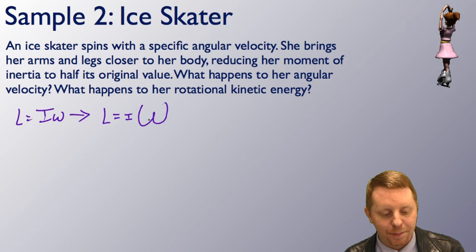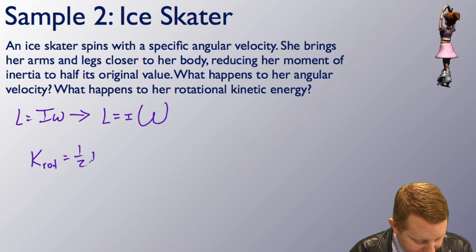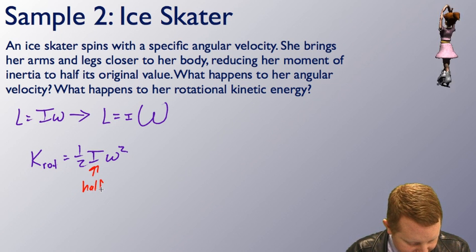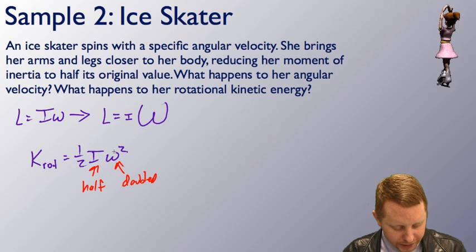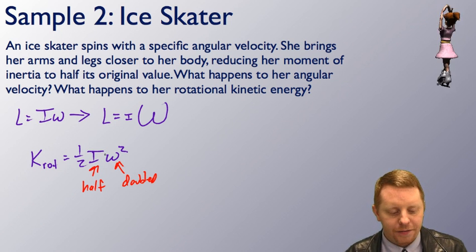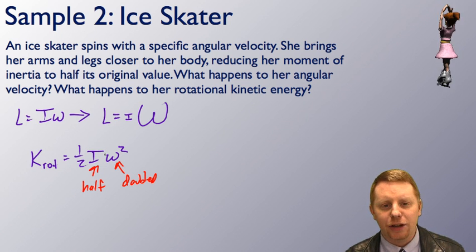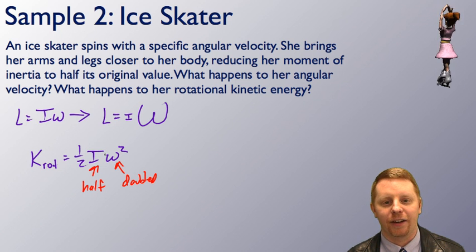What happens to her rotational kinetic energy? Rotational kinetic energy is one-half I omega squared. I was cut in half, and omega was doubled — but omega is squared, so there's a 4x increase from that term, and 50% from the halved inertia, giving a total doubling of the rotational kinetic energy. The skater must have done work to bring her arms and legs in, and that extra energy is now rotational kinetic energy as she spins at a higher angular velocity.